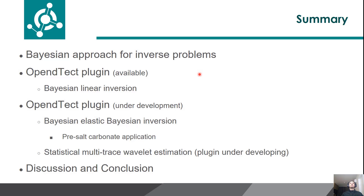Here we have the summary of this presentation. Since both inversion methods are based on the Bayesian approach for inverse problems, I will start discussing some basic concepts of it. Then I will present the theoretical basis of the Bayesian linear inversion plugin and show how it works on OpenDetect. After that I will discuss a more general Bayesian inversion that includes the estimation of facies in a joint process using transition probability matrix, and the preliminary results of an application to a pre-salt carbonate reservoir developed with Petrobras. At last, I will discuss the wavelet estimation technique we are developing for OpenDetect.